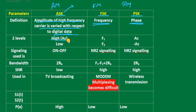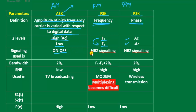In ASK, the two logic levels are: amplitude of +Ac and amplitude of zero. In FSK, two frequencies are used — f1 (higher) and f2 (lower). In PSK, the two amplitudes are +Ac and -Ac. ASK uses on-off signaling, hence it is also called on-off keying. FSK and PSK use NRZ signaling.